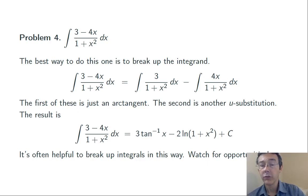Notice that if you differentiate that, you get the original function back. The derivative of 3 tan inverse of x is 3 over 1 plus x squared. And the derivative of negative 2 ln 1 plus x squared is negative 4x over 1 plus x squared. So we really did get the right answer here.